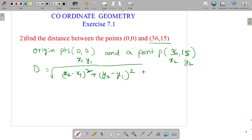So substitute the values: root of (36 minus 0) whole square, plus (15 minus 0) whole square.